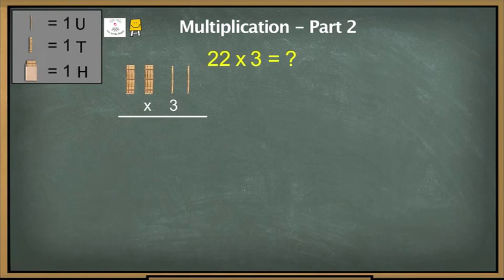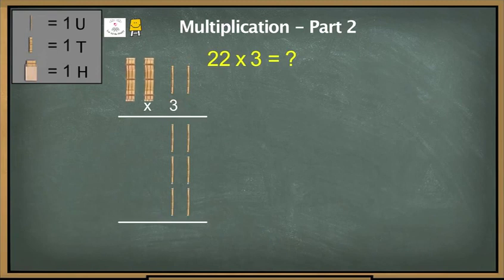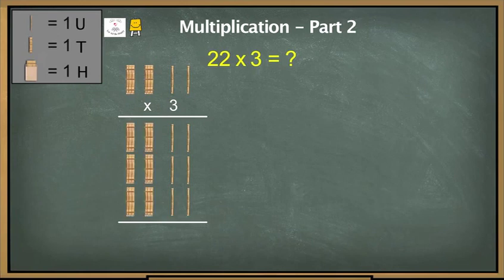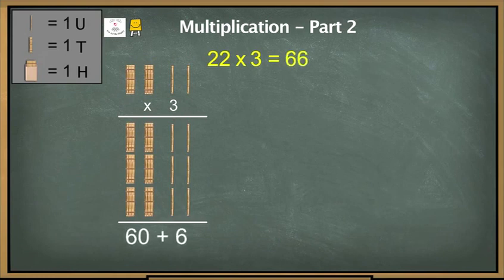We saw in the first part that when we multiply 2 units by 3 we get 6 units. We also saw that when we multiply 2 tenths by 3 we get 6 tenths. Hence when we multiply 22 by 3 we get 6 tenths and 6 units, which is equal to 66.